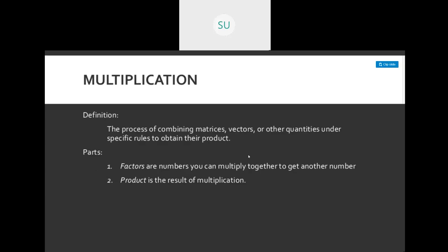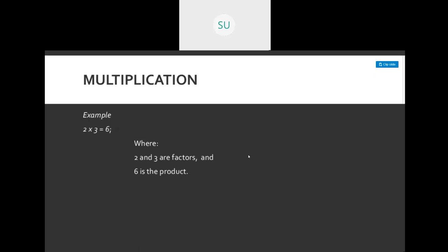Next we have multiplication. The definition is: the process of combining numbers to obtain their product. Multiplication is also known as repeated addition. For example, instead of adding 2 plus 2 plus 2 plus 2, you can just do 2 into 4 and get 8. The two or more numbers you multiply together are called factors, and the result of multiplication is called the product. Example: 2 into 3 is equal to 6 — here 2 and 3 are the factors and 6 is the product.